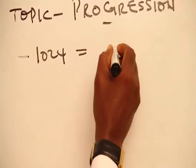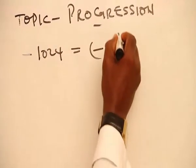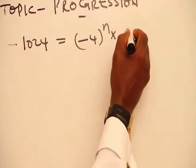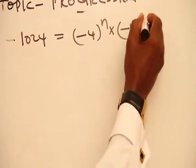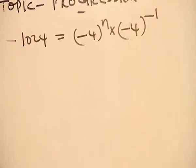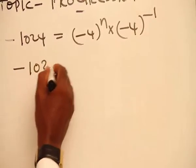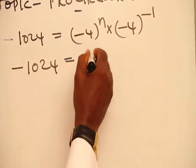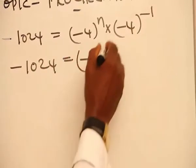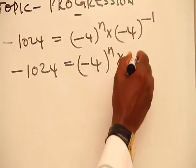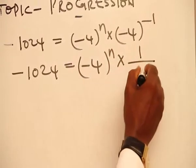1024 is equal to minus 4 raised to the power n, multiplying minus 4 raised to the power minus 1. By the laws of indices, minus 1024 is equal to minus 4 raised to the power n times 1 all over minus 4.